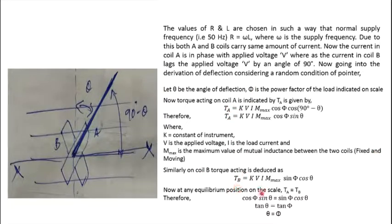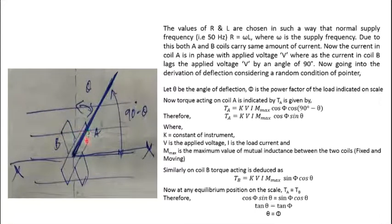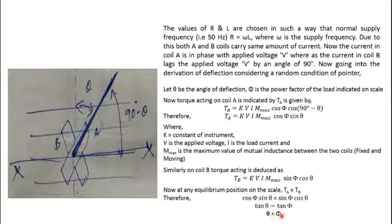Similarly, torque B equals k × V × I × M_max × sin(φ) × cos(θ). At equilibrium, when the pointer is at rest, torque A equals torque B. Since the common quantities k, V, I, and M_max cancel out, we get cos(φ) × sin(θ) = sin(φ) × cos(θ), which means tan(θ) = tan(φ), therefore θ = φ. This is a very important equation showing that the deflection angle is equal to the phase displacement angle between voltage and current.